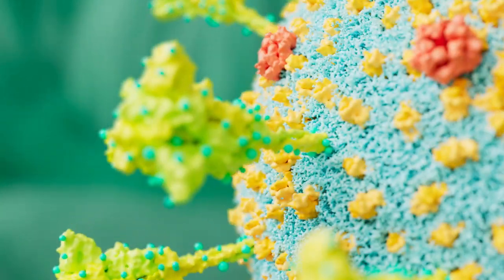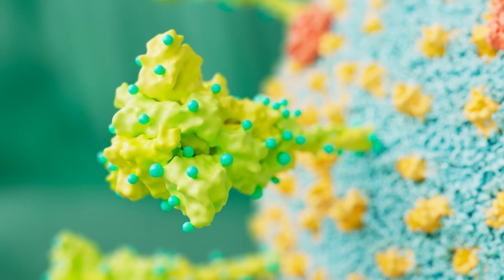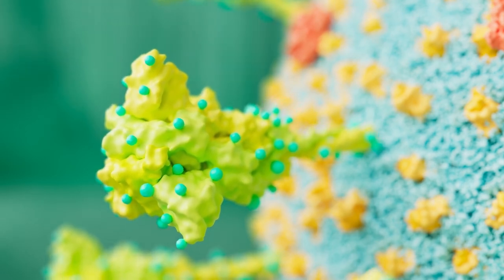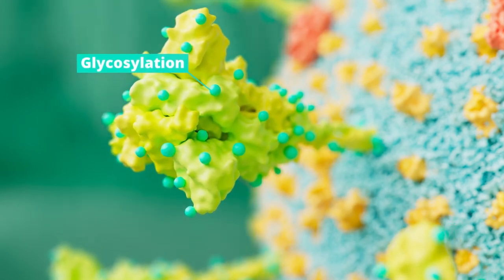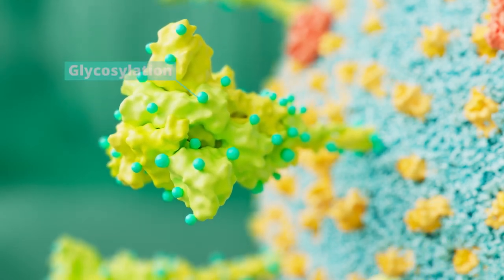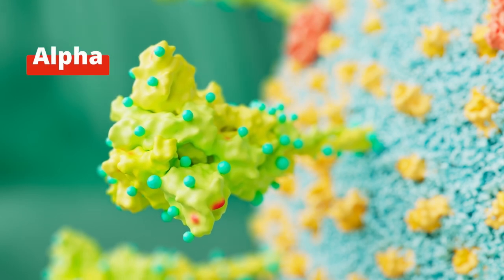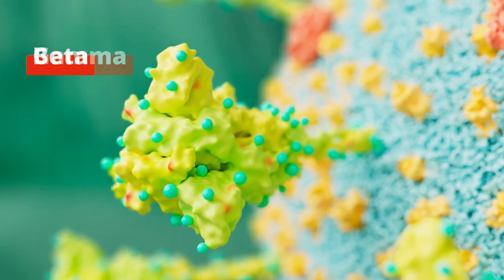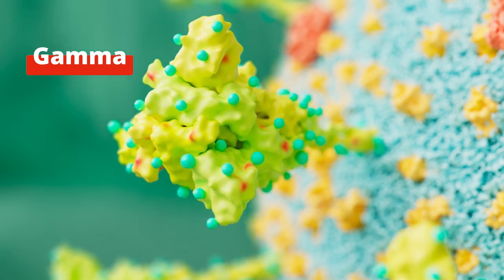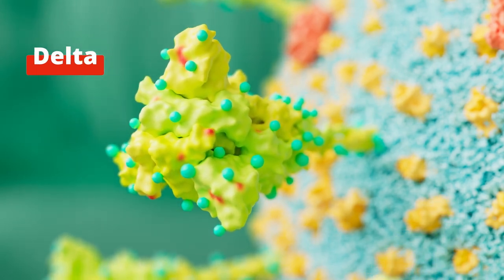The spike protein is responsible for making contact with the host cell and starting the infection. It's glycosylated, meaning it has a coat of sugars that hides it from the body's immune system. Many of the variants of SARS-CoV-2 are characterized by mutations on this spike protein that can influence its function, some making the virus more infectious.